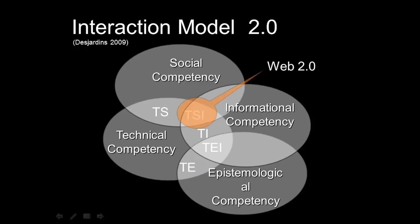According to the Desjardins Interaction Model (Desjardins 2009), Web 2.0 technologies lie at the intersection of the technical, the social, and the informational orders. Consequently, competencies required for each of these orders should be required in order to work in a proficient manner with technologies that have affordances of this nature.